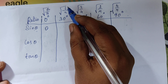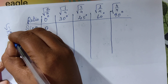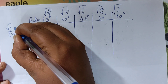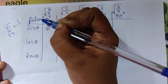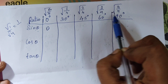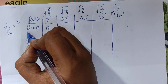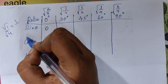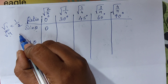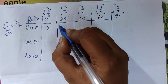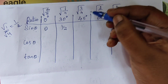For sin 30°, we take the square root of 1/4. This gives plus or minus one-half, but since these values are in the first quadrant where all trigonometric ratios are positive, we take the positive value. Square root of 4 is 2, so sine 30 degree is one by two.